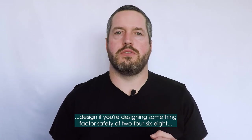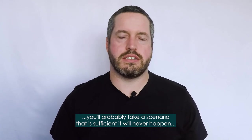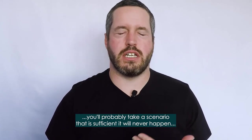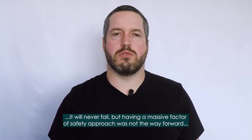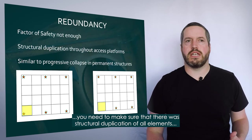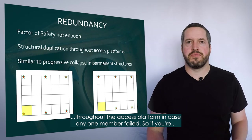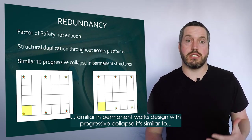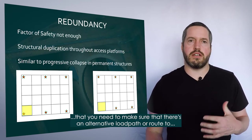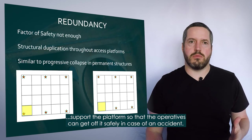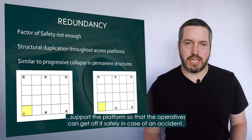On a permanent works design, if you're designing something with a factor of safety of 2, 4, 6, or 8, you'll probably take the scenario that it is sufficient and it'll never fail. But having a massive factor of safety approach was not the way forward. You need to make sure there is structural duplication of all elements throughout the access platform in case any one member failed. If you're familiar with progressive collapse in permanent works design, it's similar — you need to make sure there's an alternative load path or route to support the platform so that operators can safely get off it in the case of an accident.